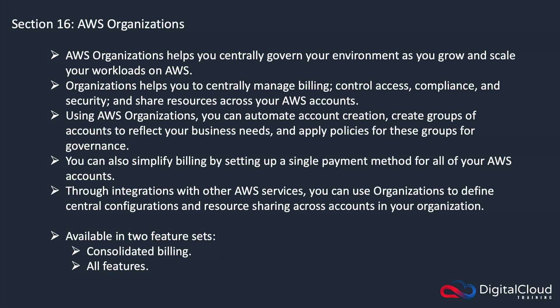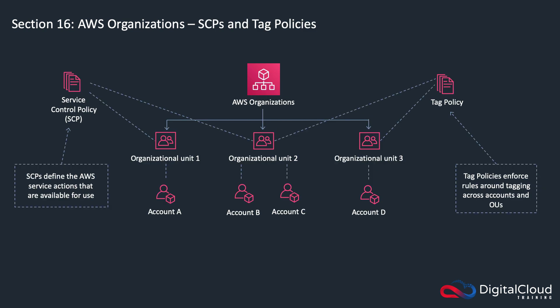The key thing to focus on is service control policies and how these apply to accounts, and also tag policies - mainly we're going to cover the SCPs. This is an example of a hierarchy where you have your master account at the top, and then you can create organizational units - think of these as organizational folders that you can put your accounts into. You create OUs - OU1, OU2, and OU3 - and in each of those you have an account or multiple accounts. SCPs define the AWS service actions that are available for use. They don't grant you any permissions - you have to be granted permissions through IAM policies. However, what they do is define whether what you've been granted in your IAM policy is even something you can do or not.